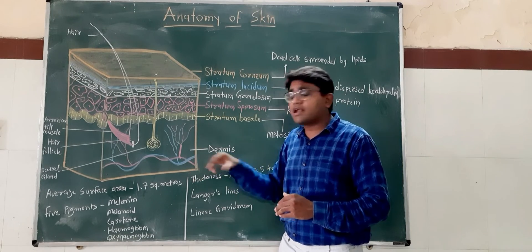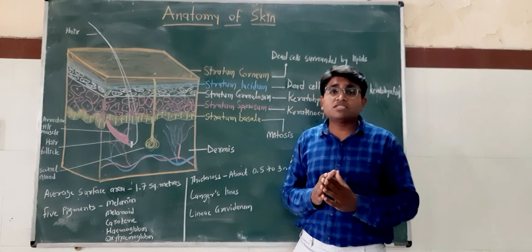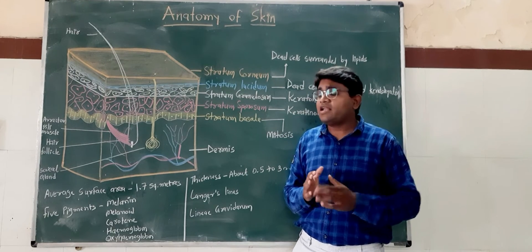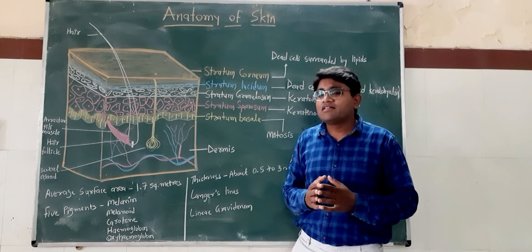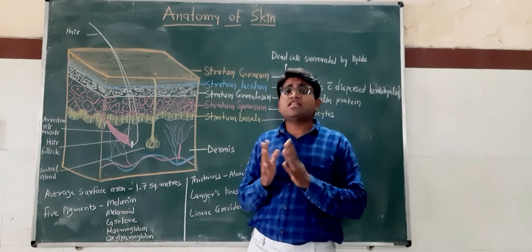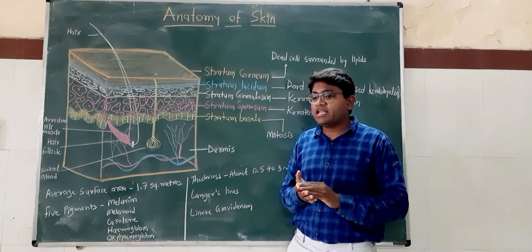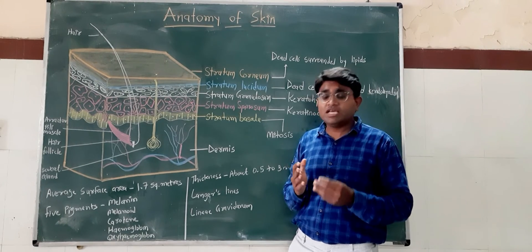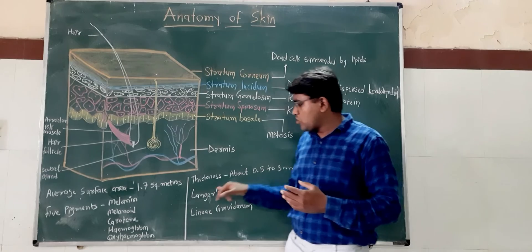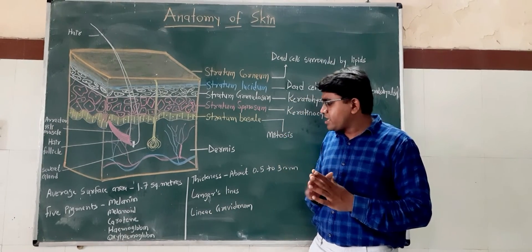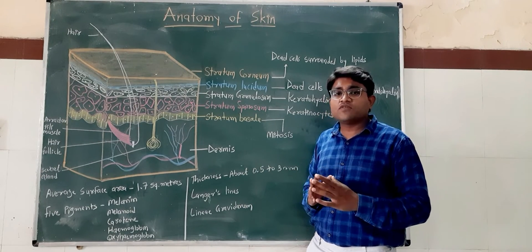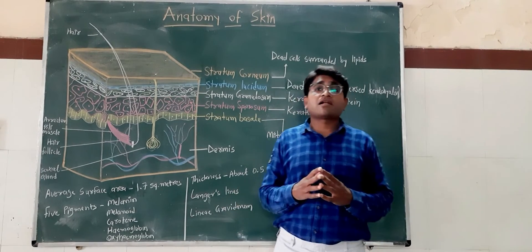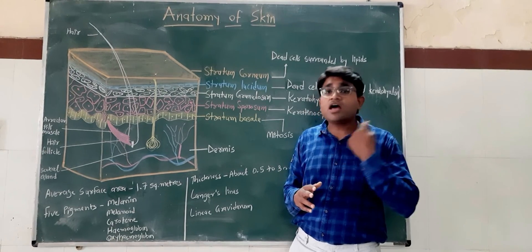After the papillary layer, there is the reticular layer. The reticular layer is formed by collagen fibers and elastic fibers. These elastic fibers provide elasticity to the skin, and during old age these elastic fibers become relaxed, which is why wrinkles form. The elastic fibers and collagen fibers are arranged in a particular direction and thus form the creases of the body. These creases are known as Langer's lines. In the limbs, Langer's lines are vertical, whereas in the trunk area they are horizontal.